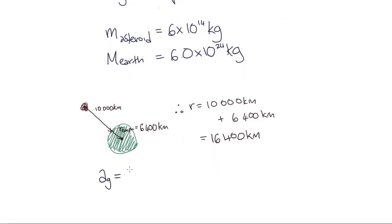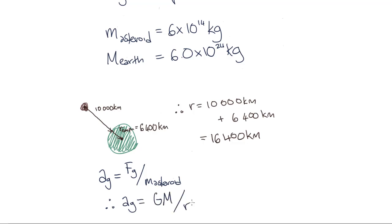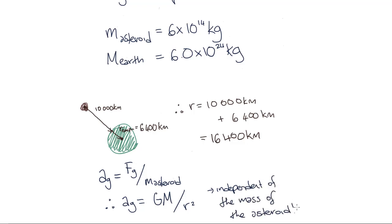We know that the acceleration due to gravity on the asteroid equals the gravitational force divided by the mass of the asteroid, because F equals ma. Therefore, the acceleration due to gravity on the asteroid equals big G times the mass of the Earth divided by r squared. We can see that this is independent of the mass of the asteroid. So let's plug in our values.